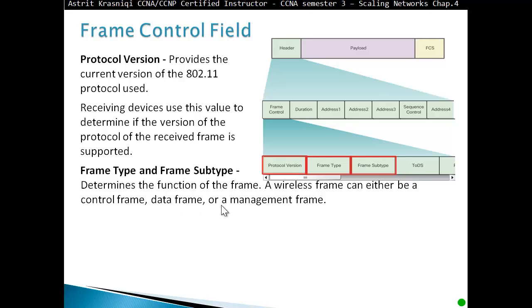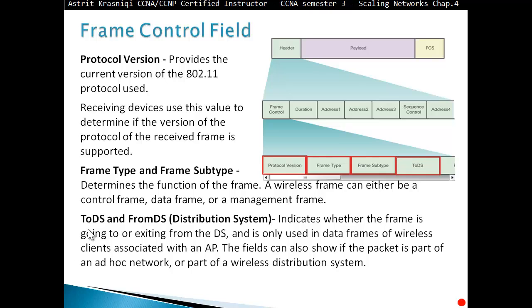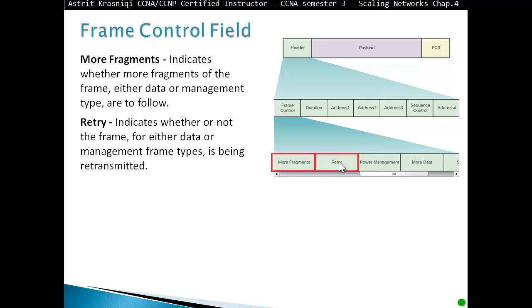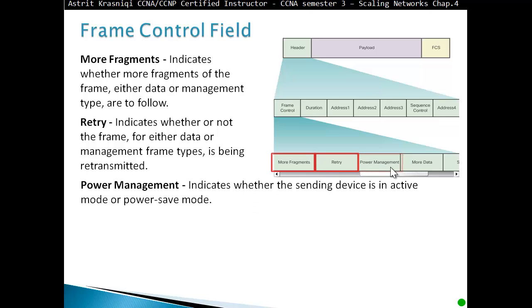ToDS or from DS (distribution system) indicates whether the frame is going to or exiting from the distribution system and is only used in data frames of wireless clients associated with an access point. The field can also show if the packet is part of an ad hoc network or part of a wireless distribution system. More fragments field indicates whether more fragments of the frame, either data or management type, are to follow. Retry field indicates whether or not the frame is being retransmitted.